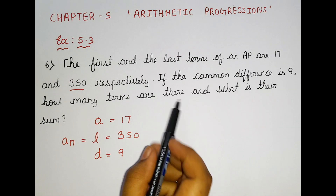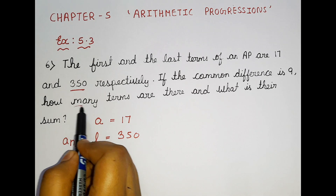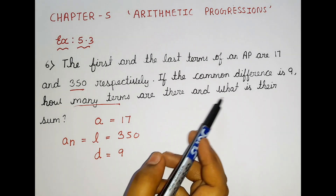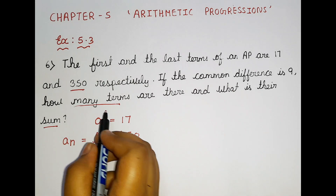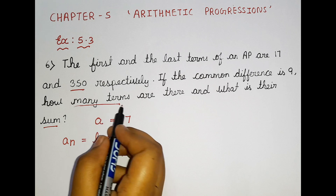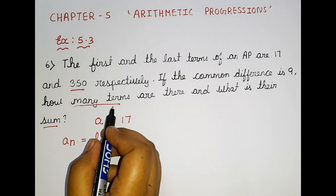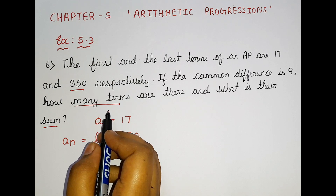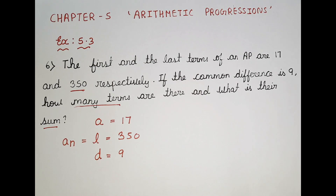How many terms are there and what is their sum? We are supposed to find how many terms there are, and then find their sum. Whenever we want to find how many terms, when it is related to terms, I am supposed to apply AN = A + (N−1) × D. I am supposed to apply that formula.